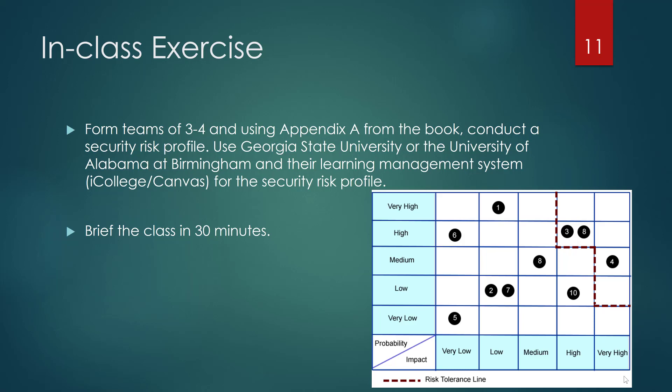Welcome back. This is the fourth of four videos looking at risk profiling, and we're going to start with an in-class exercise. Over the last three videos we covered key definitions associated with resource profiling and discussed the types of questions. I'd like you to go to Appendix A in the book, use that to do a security risk profile, and use either Georgia State University or the University of Alabama at Birmingham and their associated learning management system. Come back and brief your class — or if you're watching online, brief yourself. I'm going to assume you've already done that, because it sets context for the larger-scale considerations when doing a risk profile.